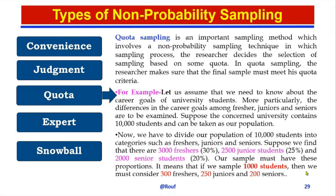The third type is quota sampling. Quota sampling is an important non-probability sampling technique in which the researcher decides the selection of the sample based on some quota. In quota sampling, the researcher makes sure the final sample must meet his quota criteria.